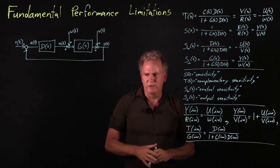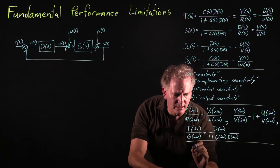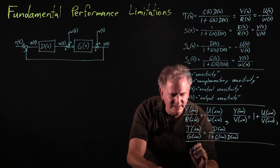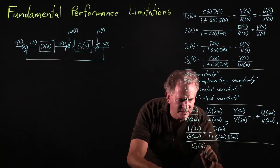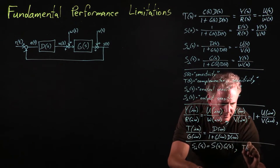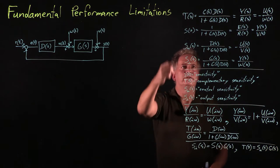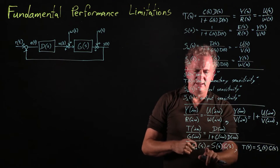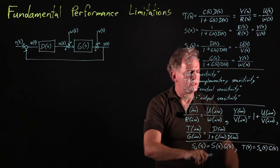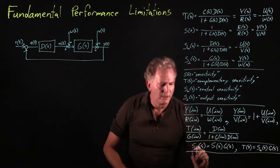It's also useful to look at relationships between these sensitivities. We have that Si of S equals S of S times G of S, and T of S equals Su of S times G of S. So T of S is just Su times G, and Si is just S of S times G, obtained by tacking on the G. We have these relationships between two pairs of the four sensitivities. Now we also have the additional concept of internal stability.